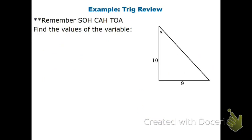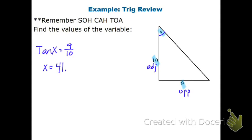To find an angle, I want to go from the angle I'm finding and use the two side lengths given. This side is opposite and this side is adjacent, so I use tangent: tangent of x equals 9 over 10, opposite over adjacent. I can then apply the inverse tangent — second tangent of 9 over 10 — and I get angle x equals 41.99 degrees.